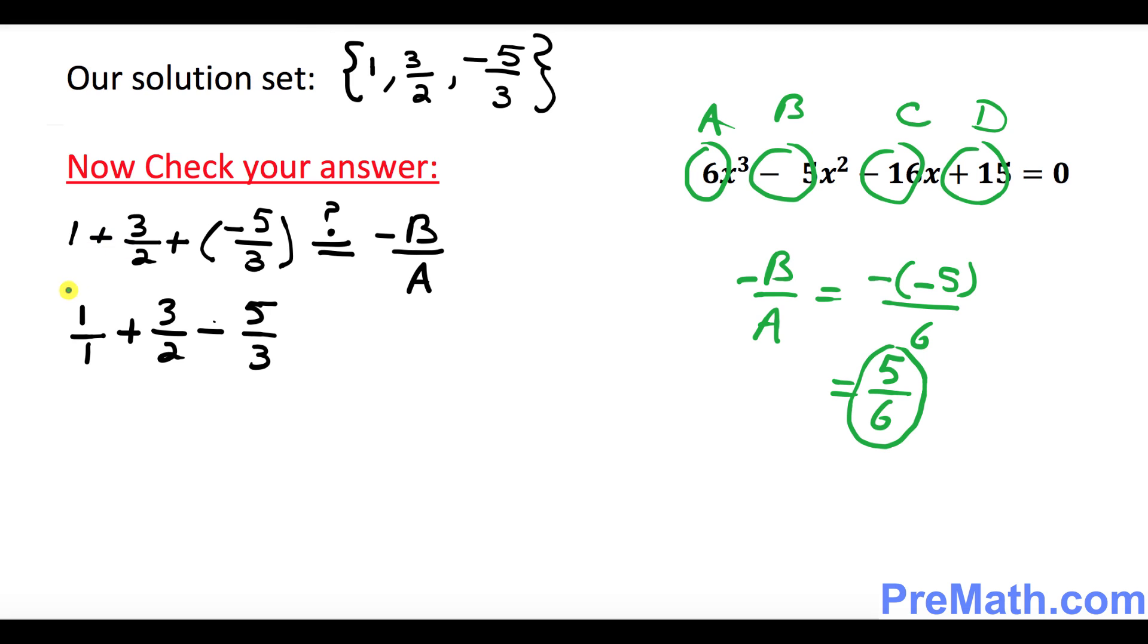So I'm going to multiply this term by 6 on the top and 6 on the bottom, this by 3 and 3, and this one by 2 and 2. So that's going to give you 6 over 6 plus 9 over 6, and this is negative 10 over 6.